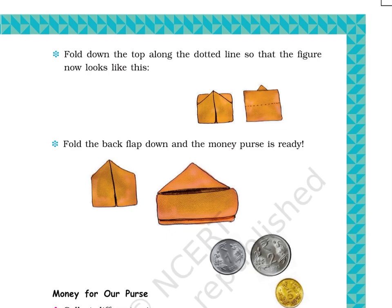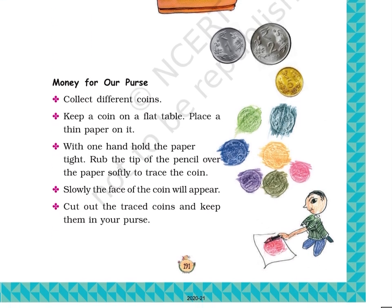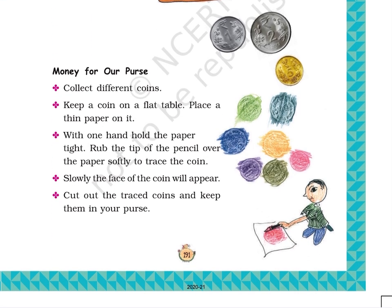Money for Our Purse. Step 1: Collect different coins. Step 2: Keep a coin on a flat table. Place a thin paper on it. Step 3: With one hand, hold the paper tight. Rub the tip of the pencil over the paper softly to trace the coin. The picture at the right side shows real coins of 1 rupee, 2 rupees, and 5 rupees, and also traced images of some coins.